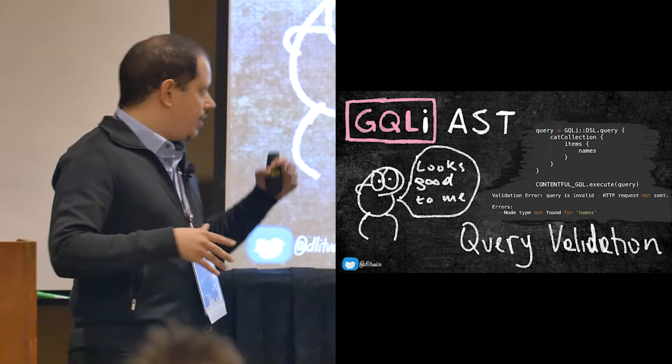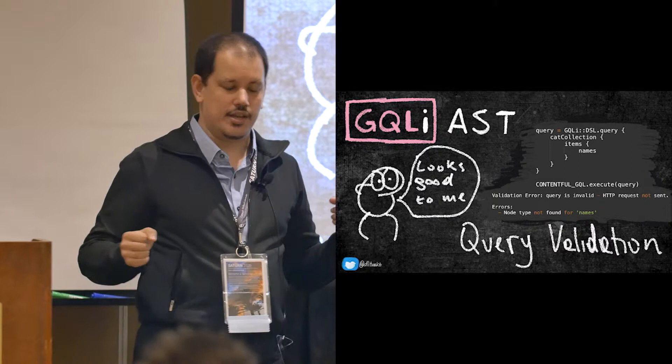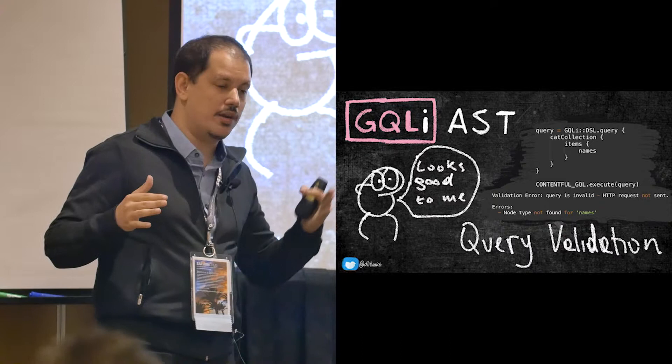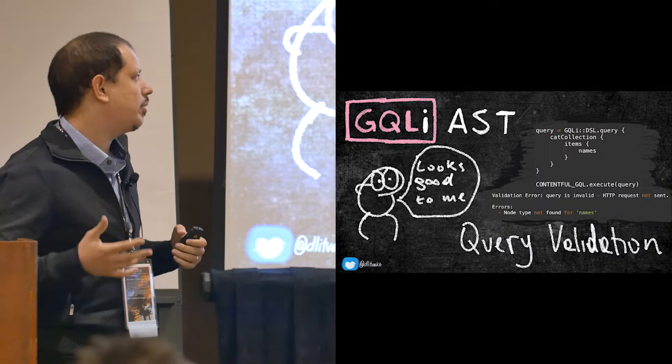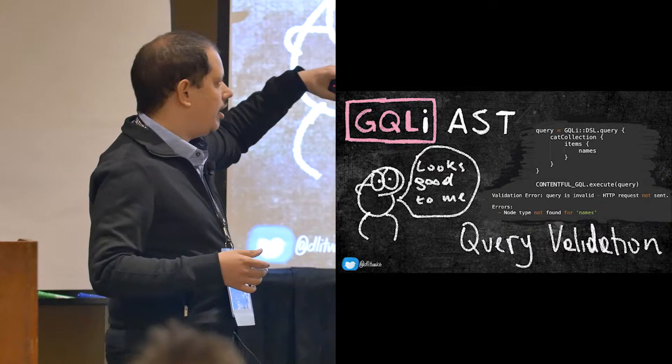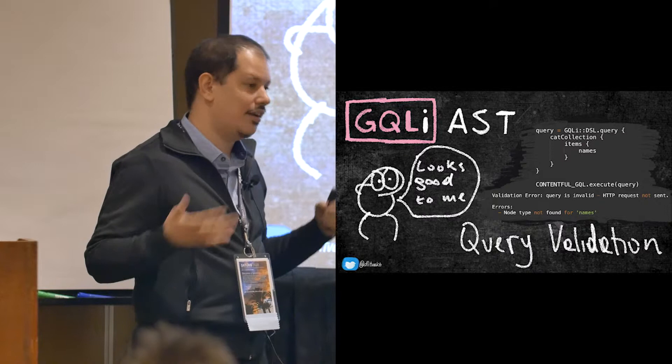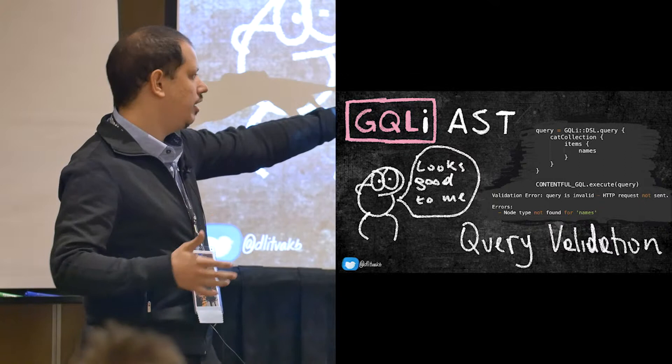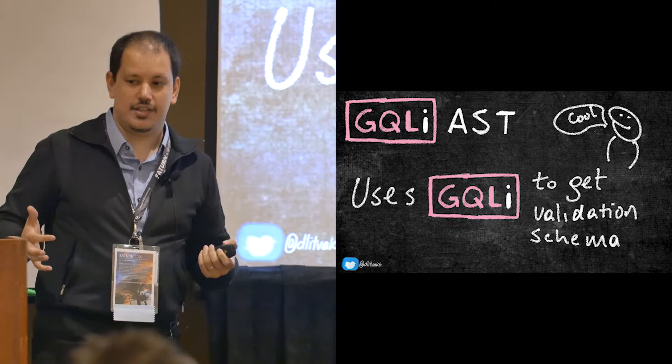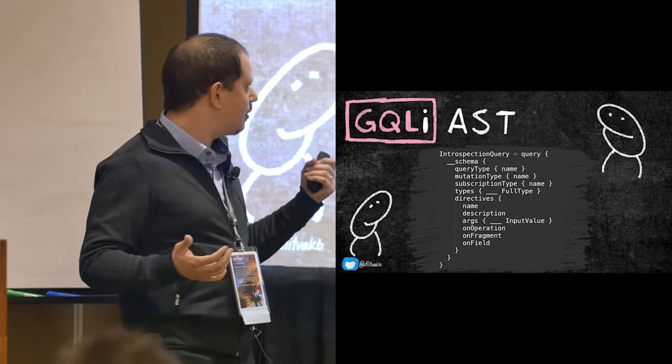Another nice thing that having this AST allows me to do is to do query validation. As I told you before at the beginning, GraphQL, one of the really, really nice things it has is that it has a very strict type definition. So whenever you define your GraphQL APIs, alongside with it, you are sending what's your schema and how it looks like and all of the operations. So for example, in this case, I'm fetching a cat collection and I'm looking into the items. I'm looking for one called names, but names doesn't exist. Name does. So my client allows you to stop the request from ever being sent because it knows that the node type doesn't exist for names.